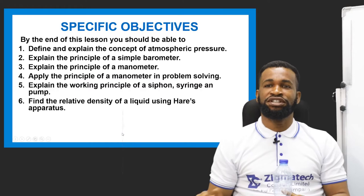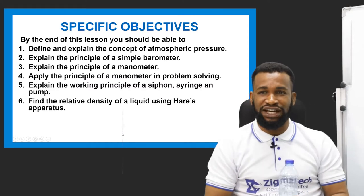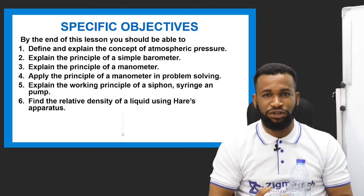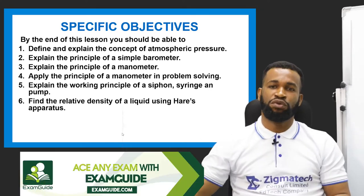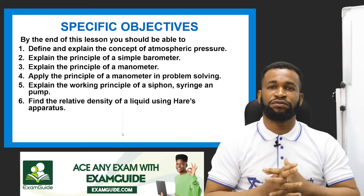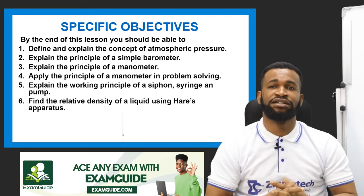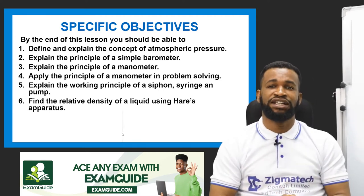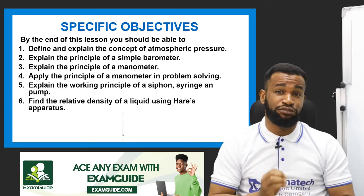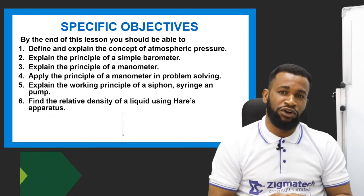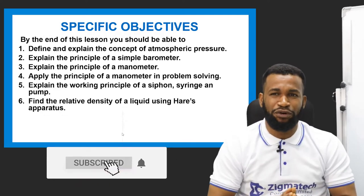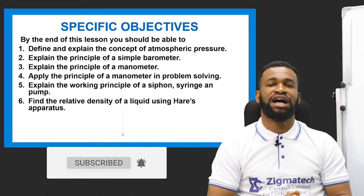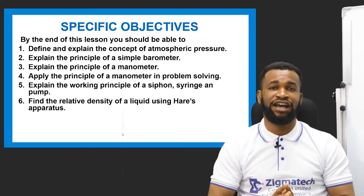This experiment and natural happening is going to lead us to a topic titled Pressure Part 2. In this Pressure Part 2, we are going to look at the definition and explanation of atmospheric pressure, the principle of the simple barometer, the principle of the manometer, applying the manometer in problem solving, the working principle of a siphon, syringe, and pump, and lastly, Hare's apparatus.